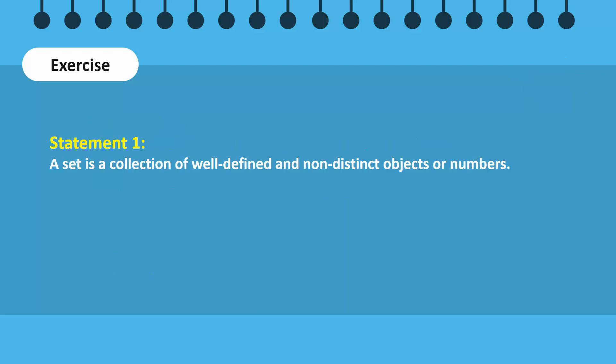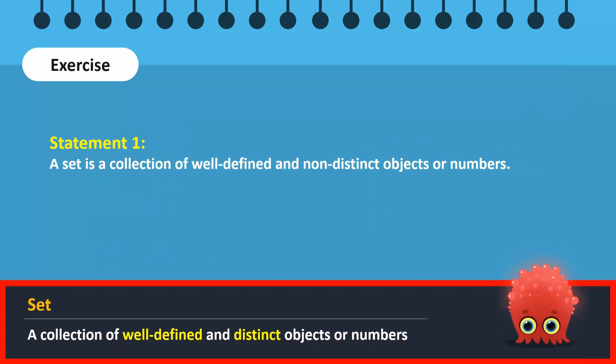Let us review. Recall that a set is defined by two key properties: well-defined and distinct objects. Non-distinct is not a correct property of sets. Therefore, this statement is incorrect.